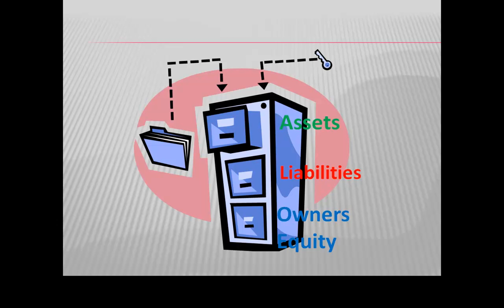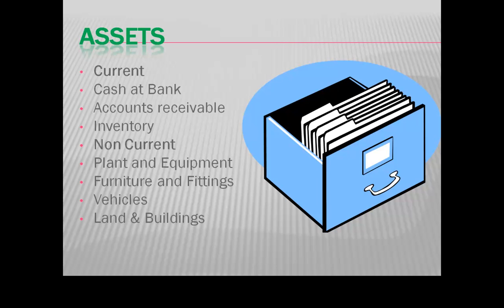Inside each of those drawers, we'll find it divided up again. Assets are divided into current assets and non-current assets. Simplistically, anything likely to turn into cash within the next year is a current asset. Examples include cash at bank, accounts receivable, and inventory. Non-current assets are things like plant and equipment, furniture and fittings, vehicles, and land and buildings — you'd expect those to last much longer than one year.